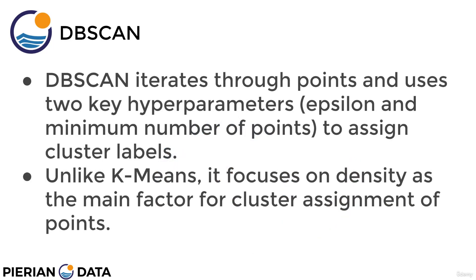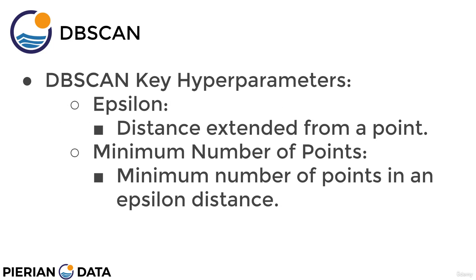DBSCAN iterates through points and uses two key hyperparameters — epsilon and minimum number of points — to assign cluster labels. We'll talk about these hyperparameters in more detail in a future lecture. The important thing to note is that unlike k-means, DBSCAN focuses on density as the main factor for cluster assignment instead of distance from one point to another. Epsilon is the distance extended from a point, and minimum number of points is the minimum number of points within an epsilon distance.